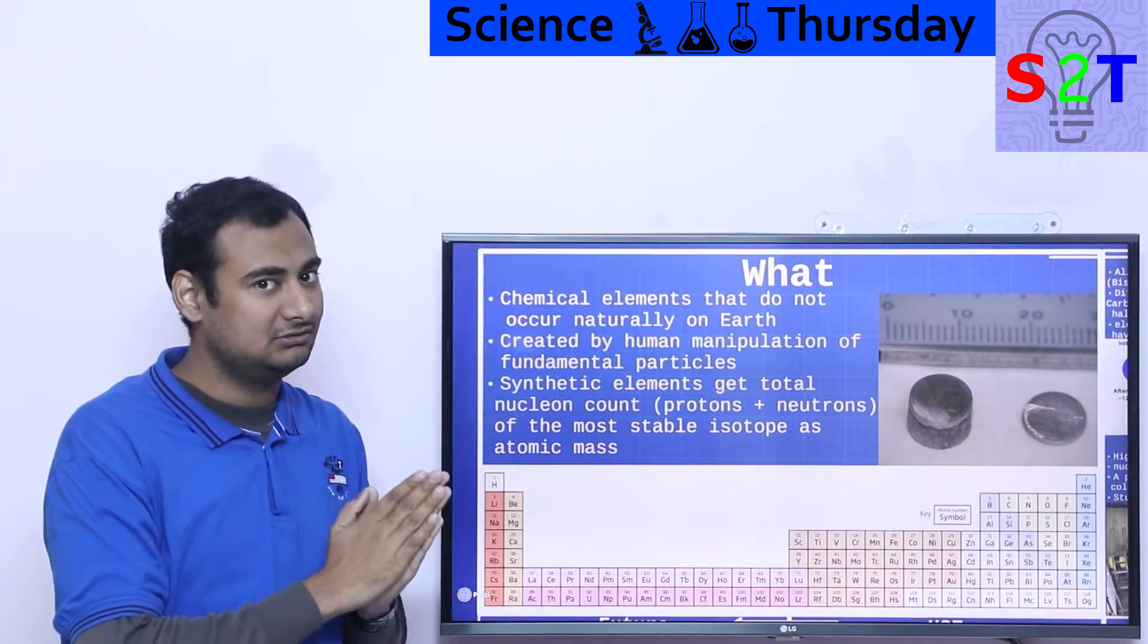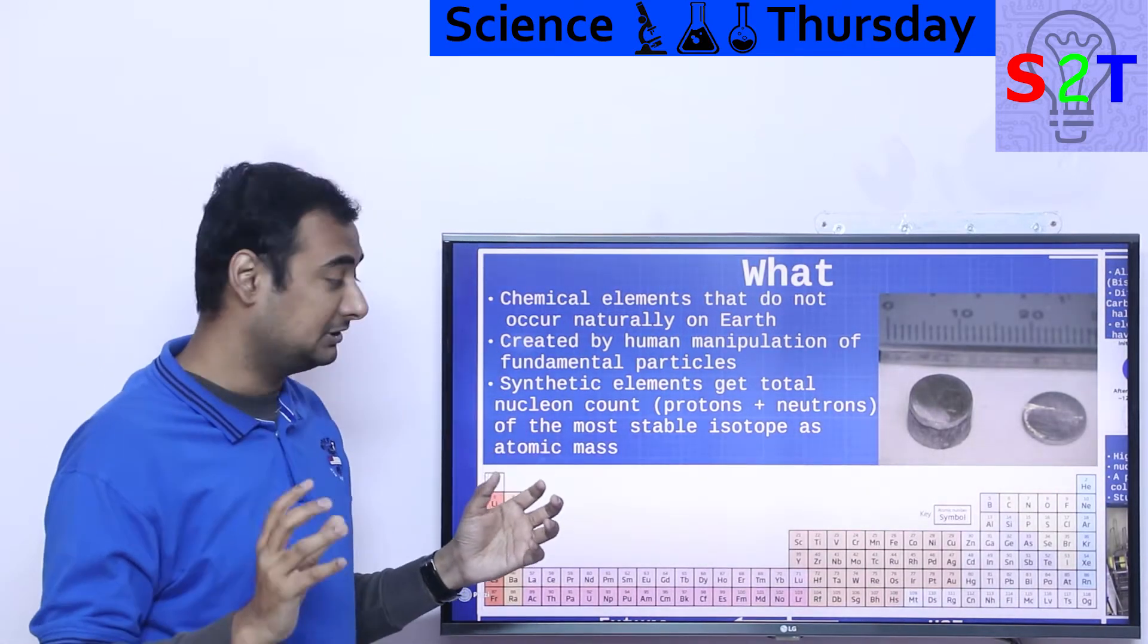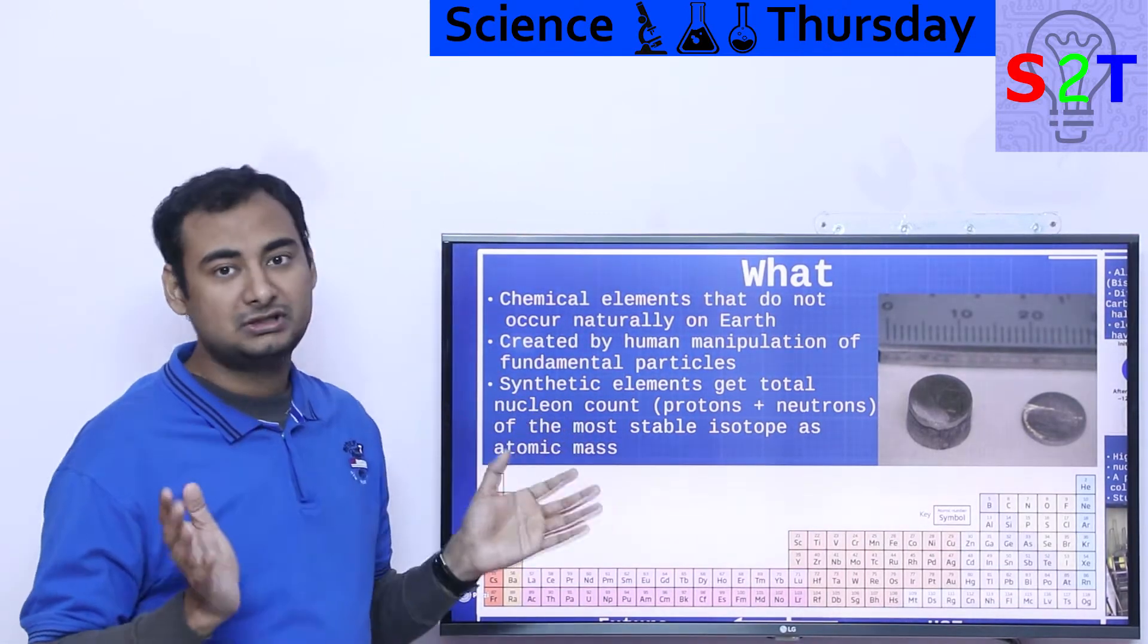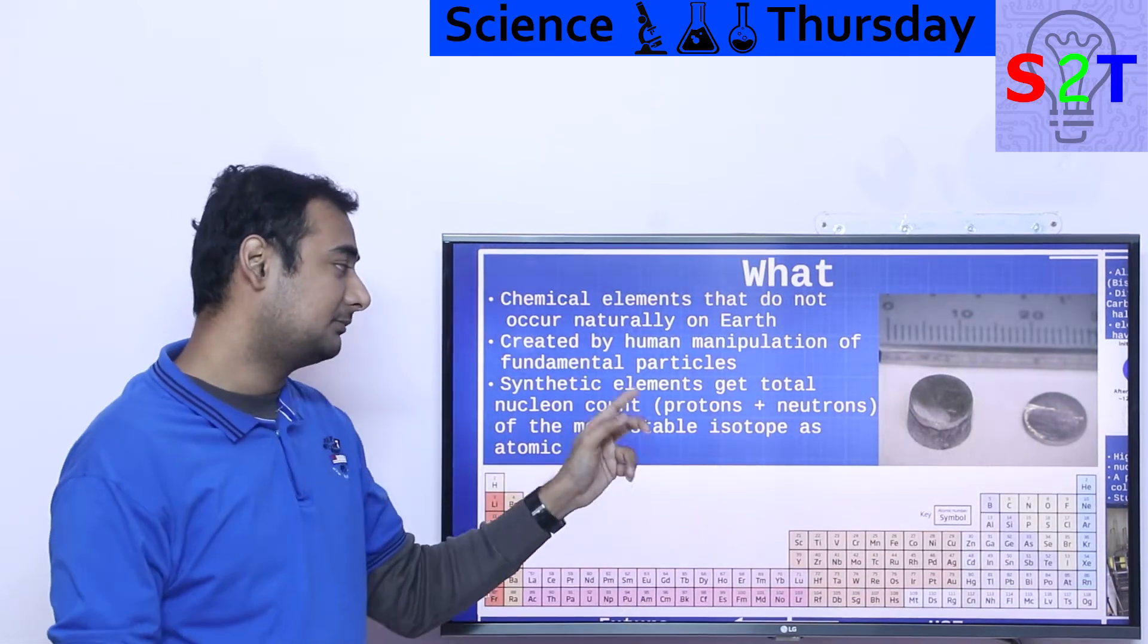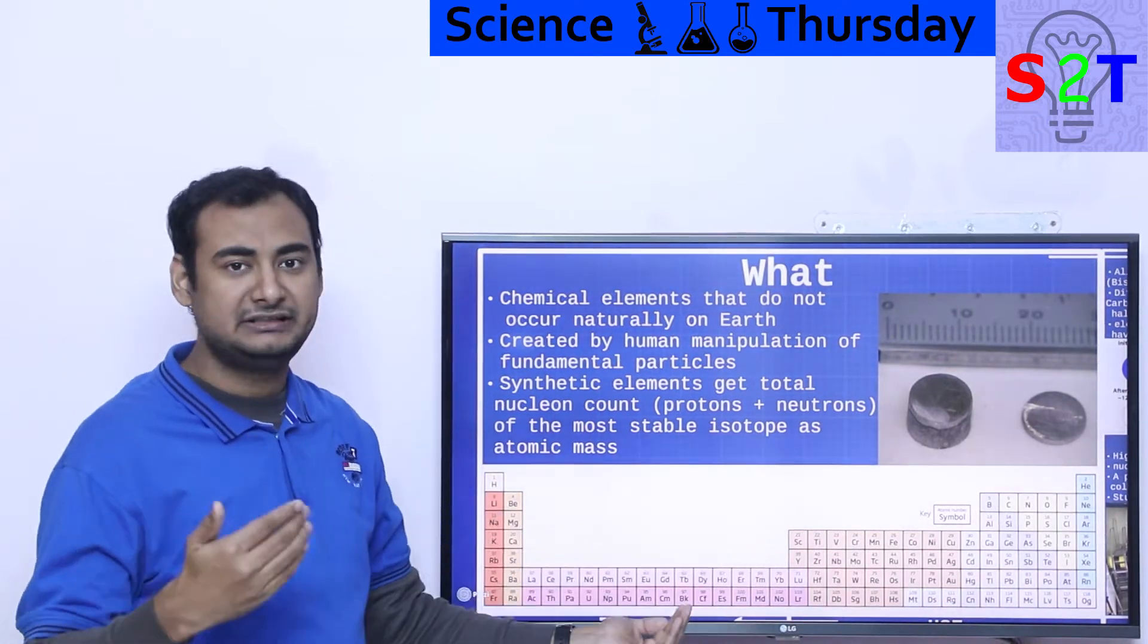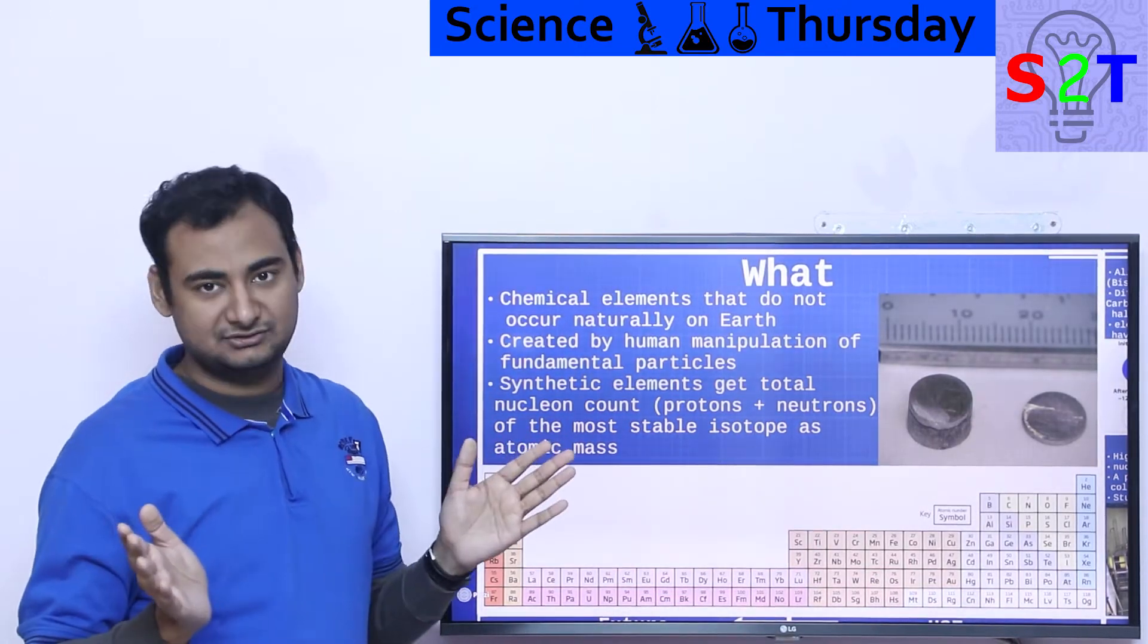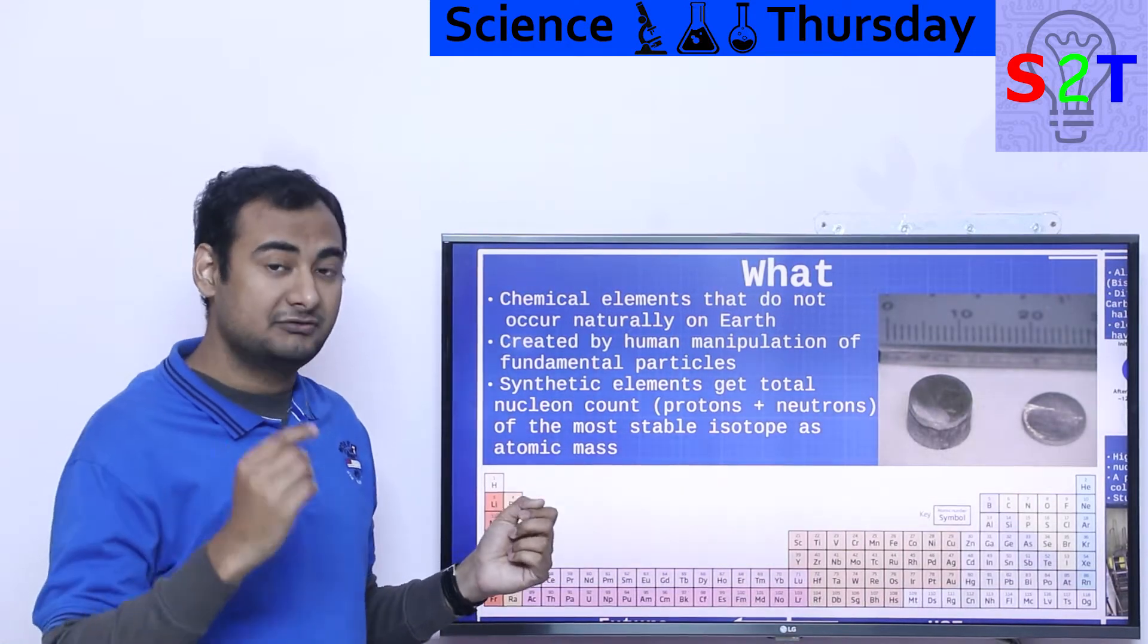When we are talking about artificial elements, it must happen on an atomic level, not below that. Synthetic elements get their total nucleon count, basically what we put on a periodic table, based on their protons plus neutrons. You have to understand the periodic table is generally filled with isotopes that are most abundantly found.